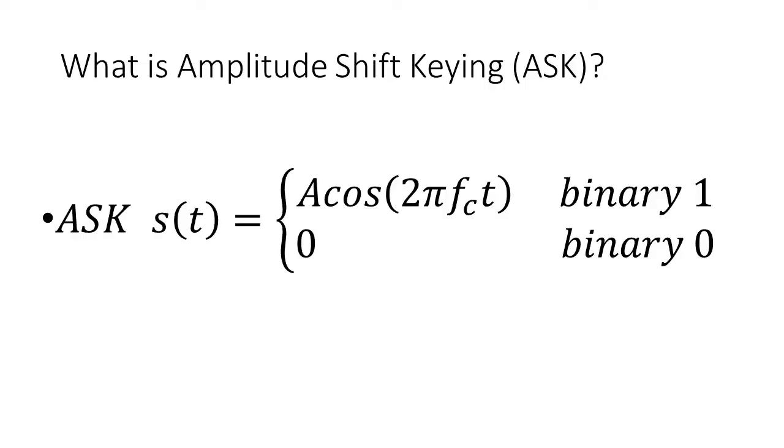Amplitude Shift Keying is a form of digital modulation. Binary 1 is represented by carrier frequency. Binary 0 is represented by no signal.